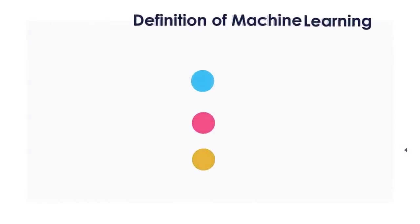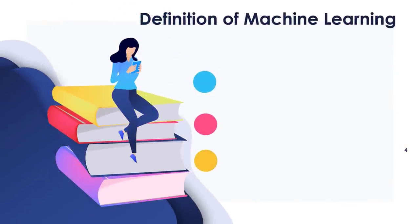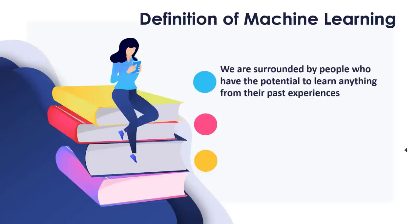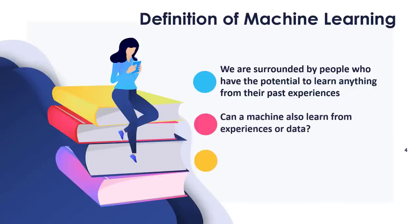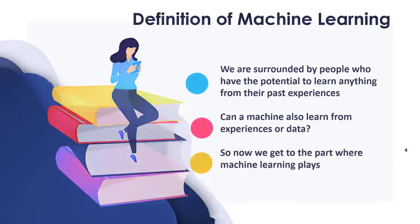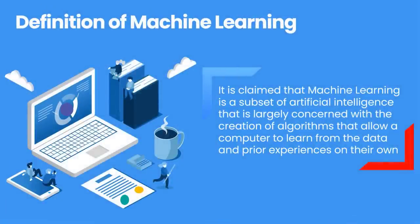Let's learn the definition of machine learning. In the actual world, we are surrounded by people who have the potential to learn anything from their past experiences thanks to their capacity for learning, and we also have computers that operate based on the instructions that we give them. But can a machine also learn from experiences or data it has previously gathered in the same way that a person can? Machine learning is a subset of artificial intelligence that is largely concerned with the creation of algorithms that allow a computer to learn from data and prior experiences on their own.